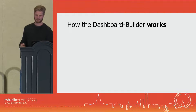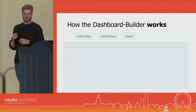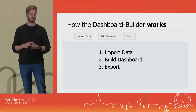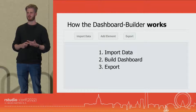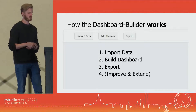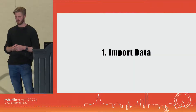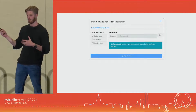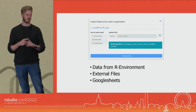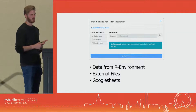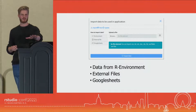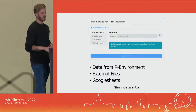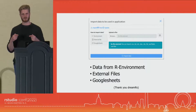Now you're wondering how it works. When you open it up, there are three buttons — those three buttons are the three steps you need to take: import data, build the dashboard, and export it. Then there's a fourth open-ended step: improve and extend. For importing data, we have a module where you can import data from your environment, load external files, and Google Sheets. I didn't create this — I shamelessly stole it from the guys from Dreamers.